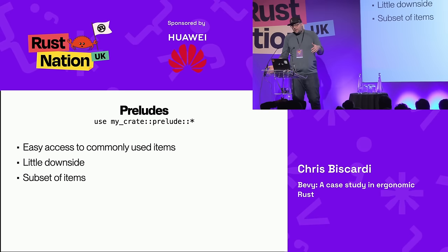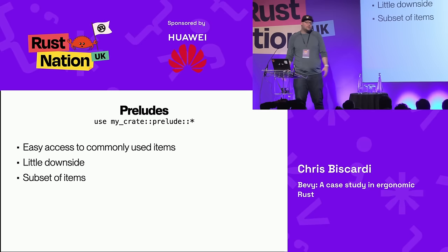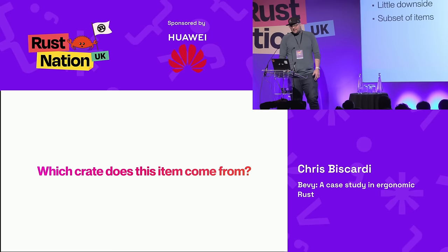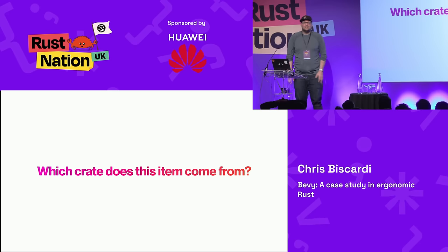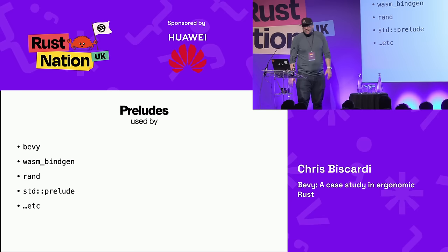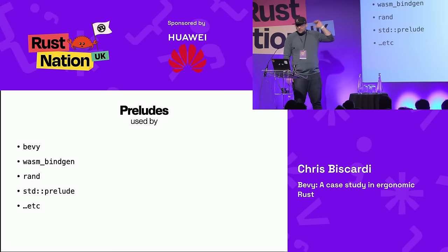Preludes — a lot of crates use them, some don't. They're mostly good if you're doing API design. If people are going to use your crate, they're going to use some set of it — probably an 80% set or whatever. Preludes are great for that; there's very little downside. The only downside is figuring out which crate an item comes from if you're new and don't have Rust Analyzer set up yet. But that's an edge case — preludes are generally very good things used by a whole bunch of projects.